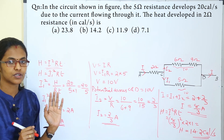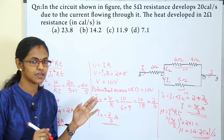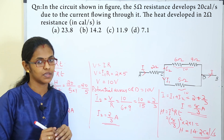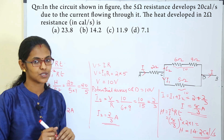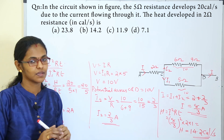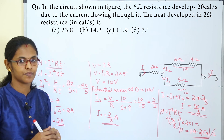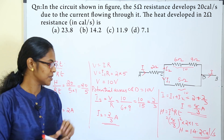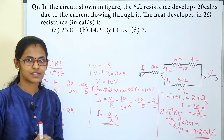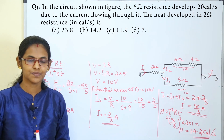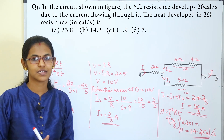Looking at the answer options, the answer is Option B: 14.2 kilocalories per second. Is it clear? Thank you for watching.